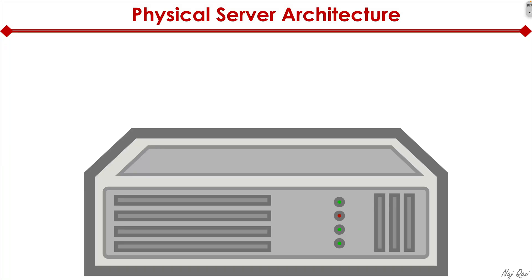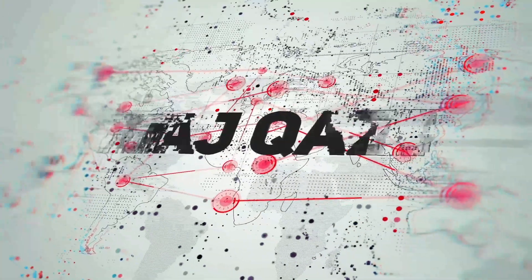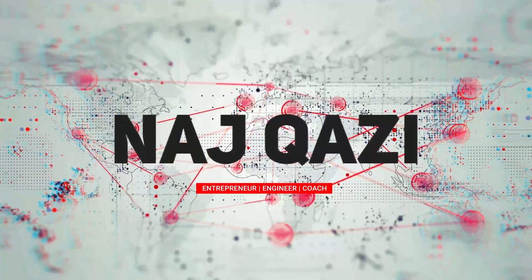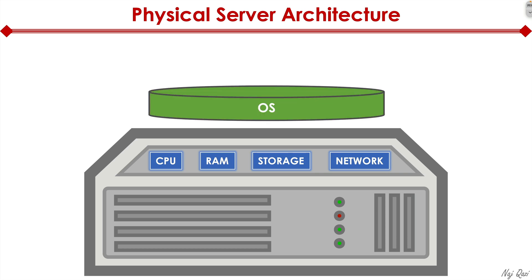Now I'm going to zoom into the physical server architecture — what's inside of a server. We got the CPU, we got the RAM, which is memory, we got the storage, which is the hard drives, we got the network, because ultimately that server needs to connect to the internet or the rest of the network.